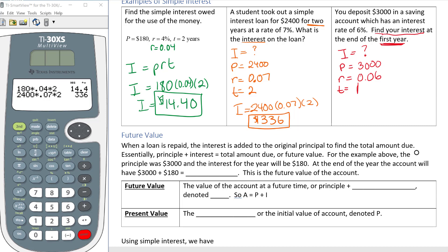When I plug this in I have I equals P which is 3,000 times my rate which is 0.06 times 1. So I'm going to clear that out, I'm going to try 3,000 times 0.06 times 1, and that gives me 180. So we have $180 of interest over the first year on our deposit of $3,000 with an interest rate at 6%.